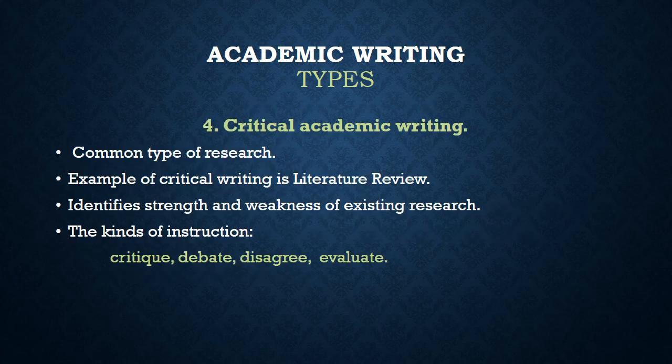The fourth type of academic writing is critical academic writing. Critical academic writing is common for research, whether at postgraduate level or advanced undergraduate level. In all levels, critical academic writing is a common type. An example of critical academic writing is the literature review — in a dissertation or thesis, the second chapter is typically a literature review.